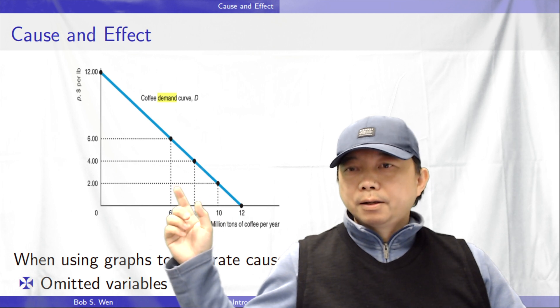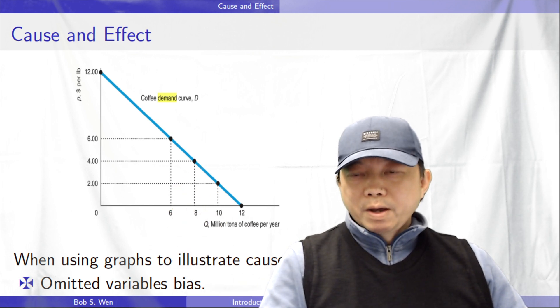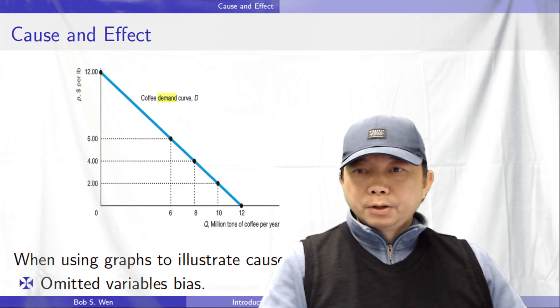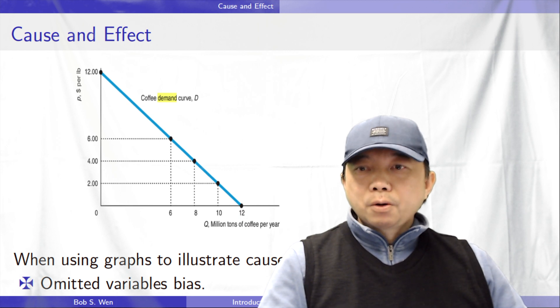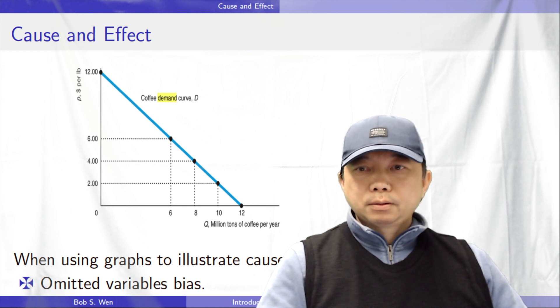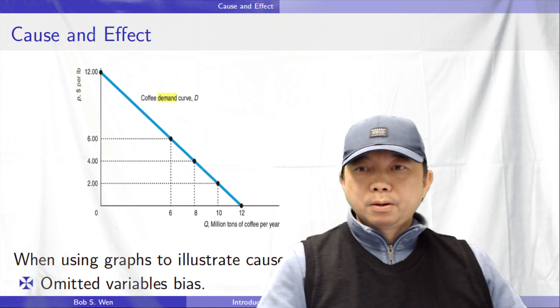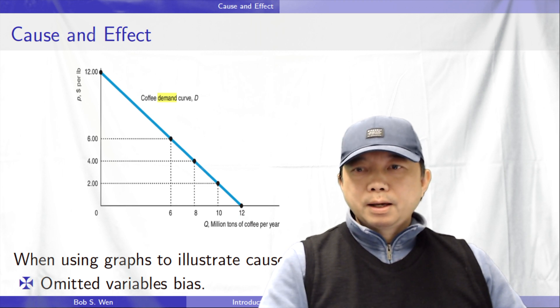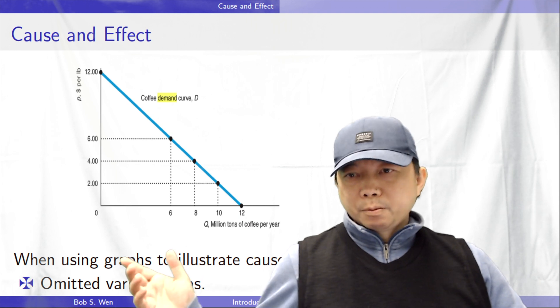When we see this demand curve, we would like to ask whether other factors that influence demand are held constant. If yes, the curve shows how demand changes with price. If not, then the curve may be misleading because demand changes may be due to other factors. It is called the omitted variable bias.